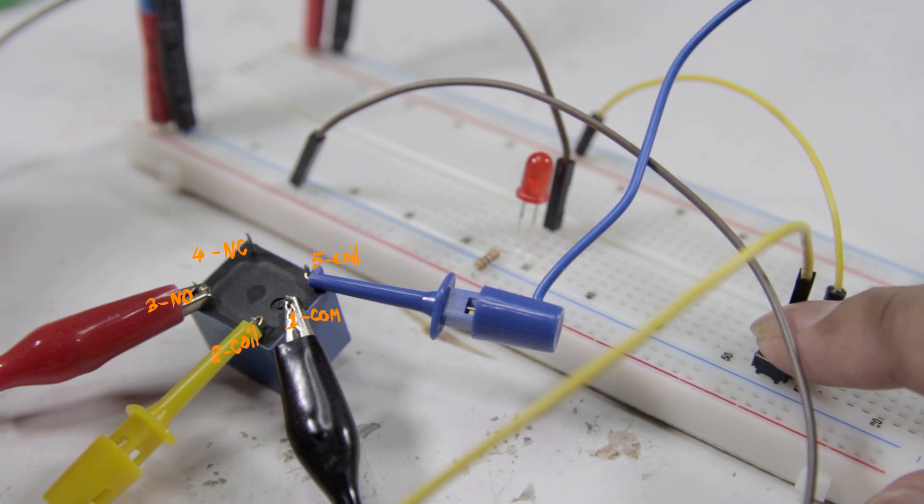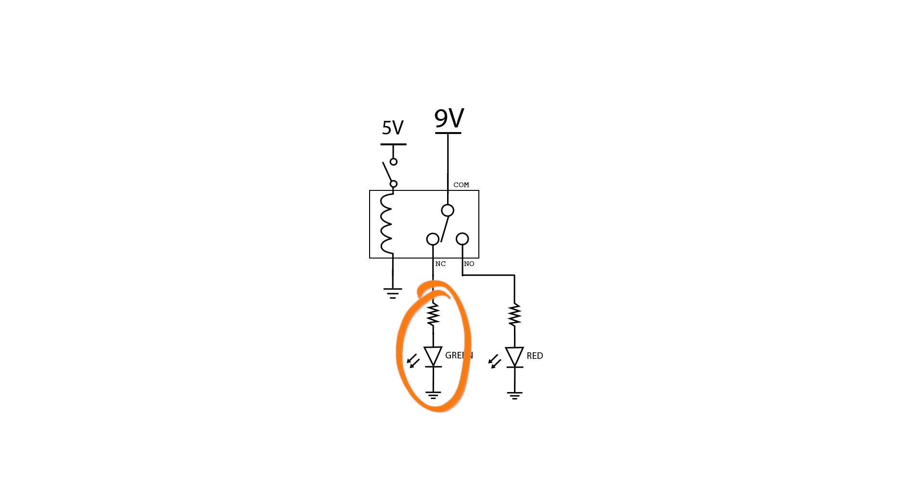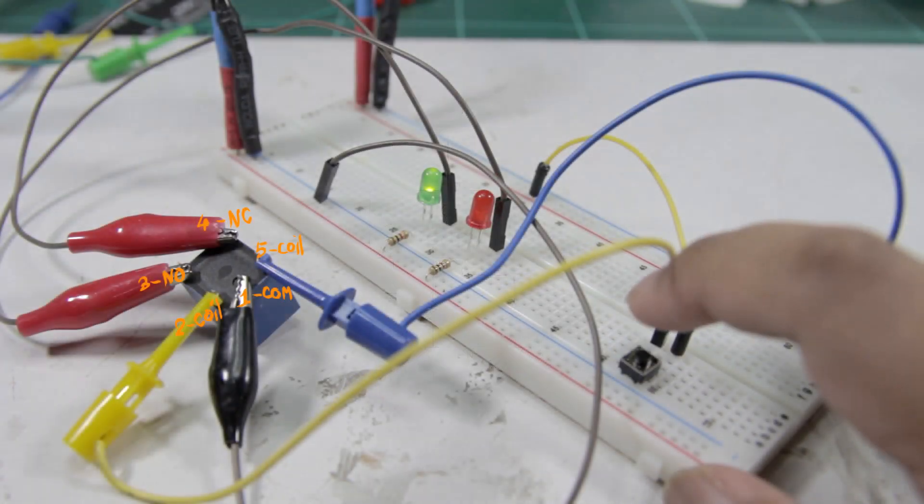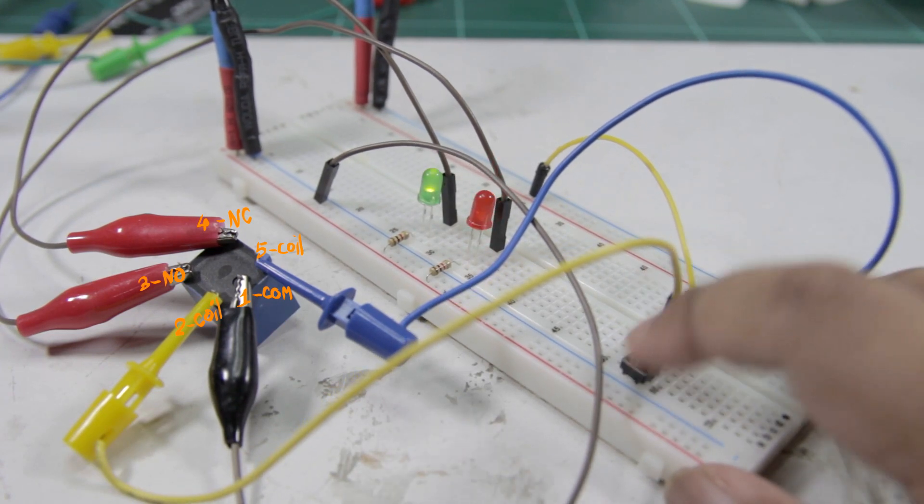Since this is a double throw relay, I could connect another LED to the normally closed pin and have myself an alternating LED circuit controlled by the relay.